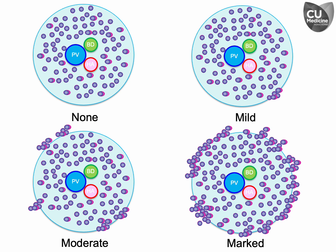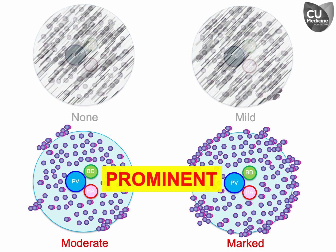A mild degree is characterized by focal interface hepatitis breaching the portal-lobular interface. A moderate degree involves multifocal interface hepatitis affecting less than 50% of the circumference of most portal tracts. A marked degree indicates extensive interface hepatitis affecting more than 50% of the circumference of most portal tracts. Prominent interface hepatitis means the presence of moderate or marked interface hepatitis.